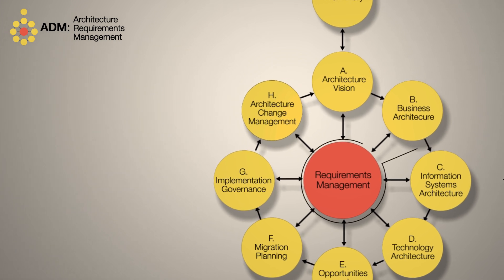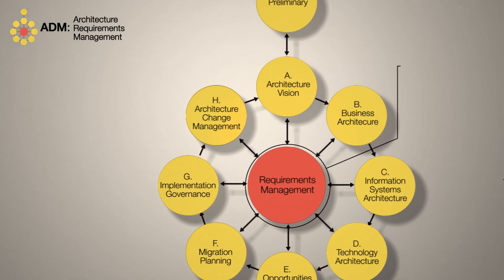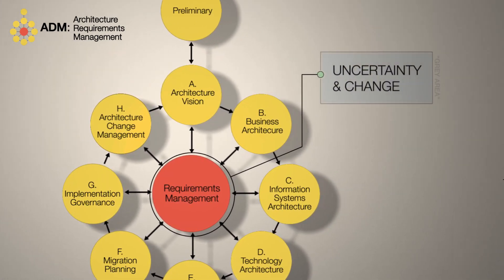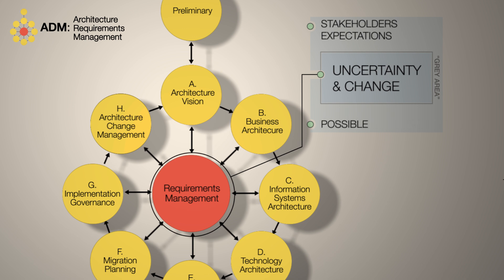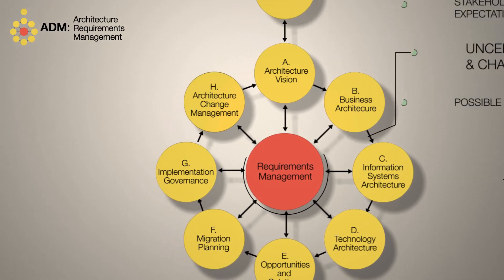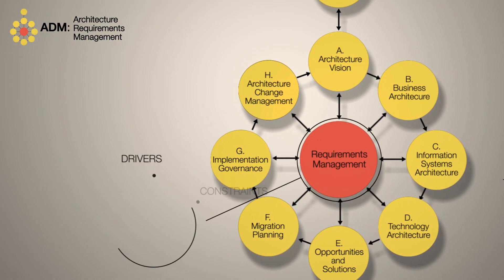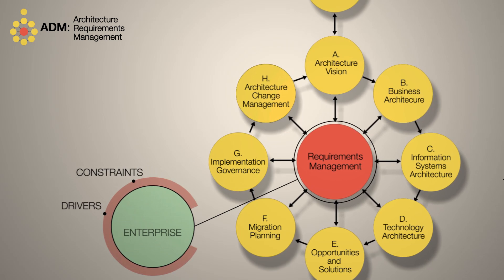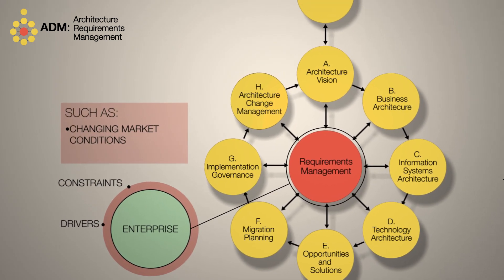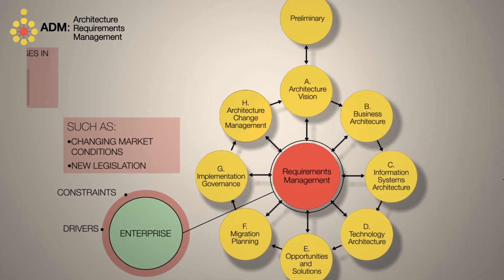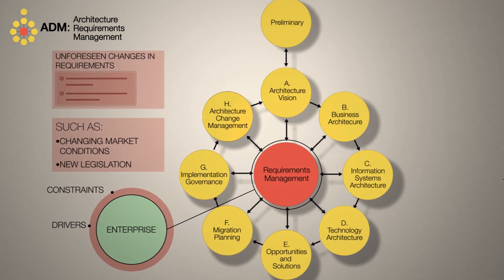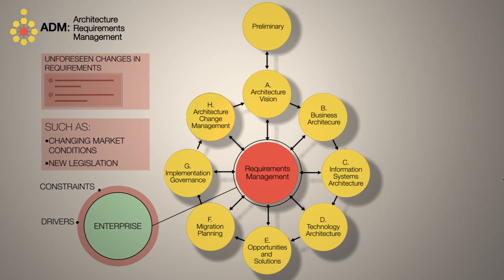Dealing with changes in requirements is crucial. Architecture deals with uncertainty in change — the grey area between what stakeholders expect and what is possible. Architecture requirements are therefore invariably subject to change. Moreover, architecture deals with many drivers and constraints which are beyond the control of the enterprise, such as changing market conditions or new legislation, which can produce changes in requirements in an unforeseen manner.